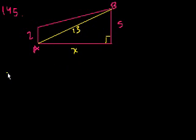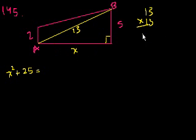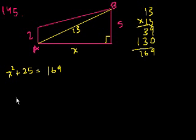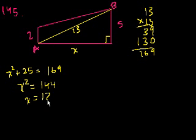If we call this x, we could say x squared plus this side squared plus 25 is equal to 13 squared. 13 squared is what, 169? I want to say that, but let me check. I haven't memorized my 13 times tables. 10 times 13 is 130. Yeah, 169. It equals 169. Subtract 25 from both sides. You get x squared is equal to 144. That tells us we're on the right track. We've got a perfect square. So x is equal to 12.